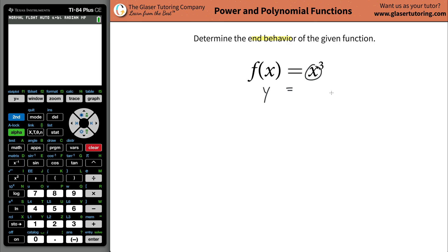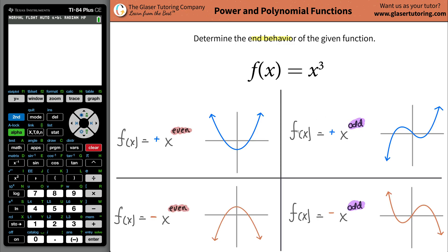As the x value goes to negative infinity and positive infinity. Now I created this little table. So there are four general cases that you have to be familiar with, and you can divide them up into two and two.